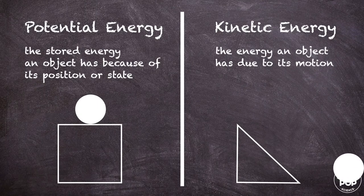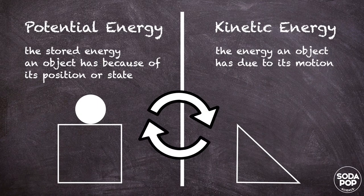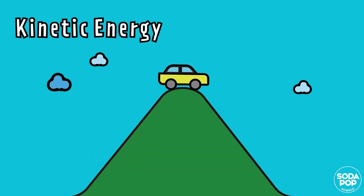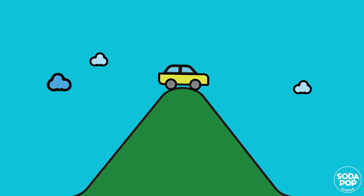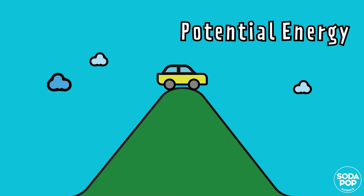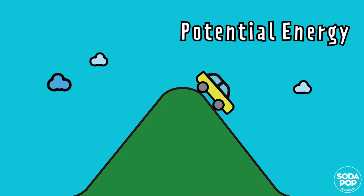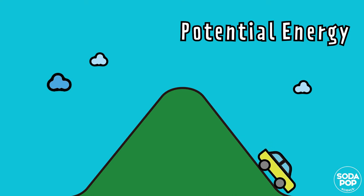Kinetic energy and potential energy can change forms. For example, a car moving up the hill has kinetic energy because the car is in motion. When the car reaches the top of the hill and is just about to go down, it has the most potential energy, because the object reaches its highest point in the air before falling. When the car moves down the hill, the potential energy changes into kinetic energy.